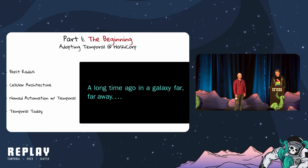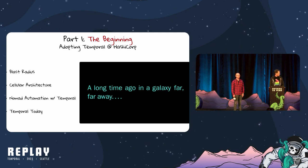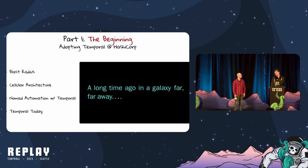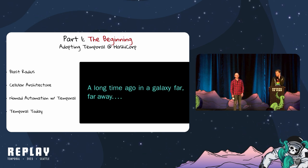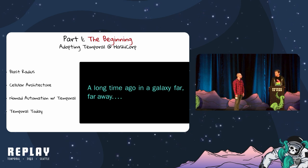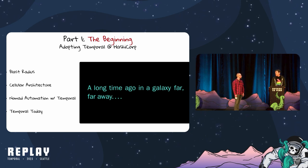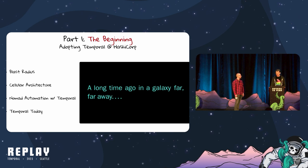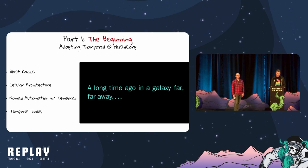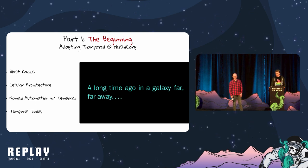The first part of our story is a story about Terraform Cloud. It's a story about blast radius, how it impacted us as an infrastructure organization, and how we dealt with it by embracing cellular architecture. We'll explain how Temporal was instrumental in enabling this architectural change, and then we'll discuss how we use Temporal today.